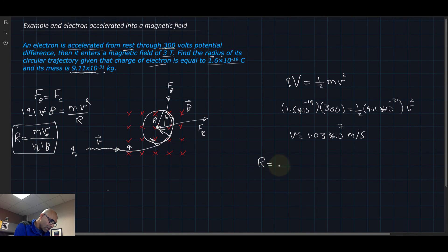I'm going to plug in the numbers. The mass is 9.11 times 10^-31 times the velocity, which we found from here, 1.03 times 10^7 meters per second.